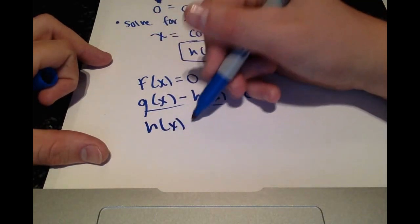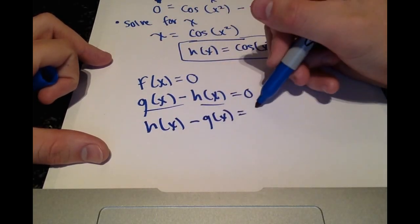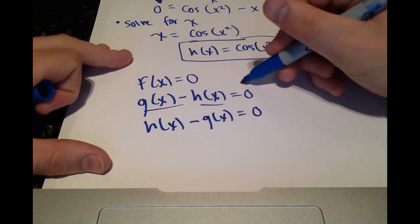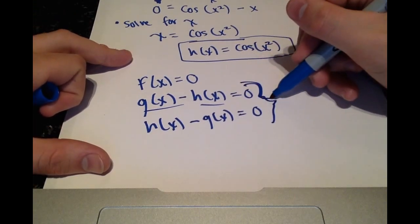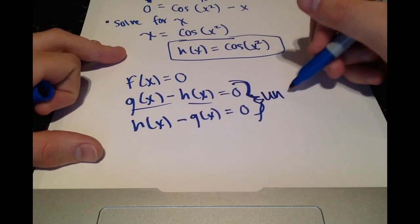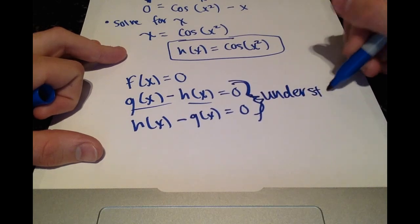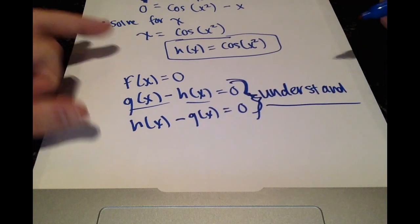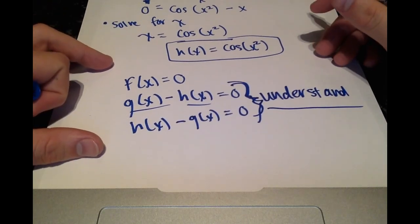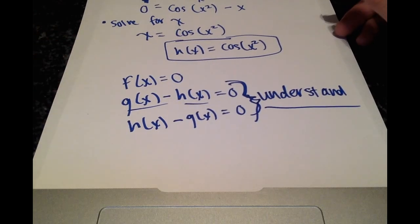then h of x minus g of x will also equal 0. So that's where you really should understand what you're doing and that there's more than one right way to do these problems.